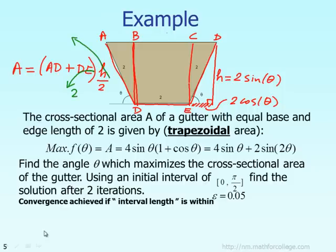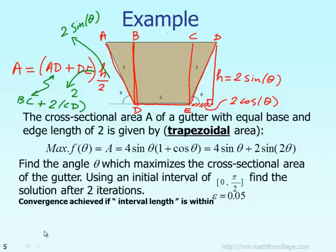H can be replaced by 2 times sine of theta. AD, according to the picture, equals BC plus twice CD. BC equals 2, same as DE, and CD equals 2 cosine of theta. So, using the area of the trapezoid, you can figure out that the area of the gutter you want to maximize is given by that formula.